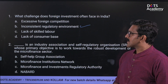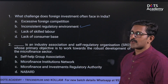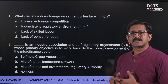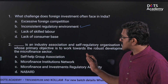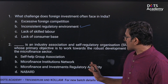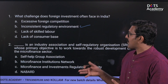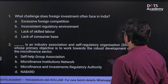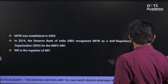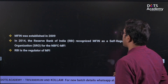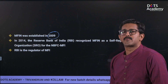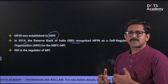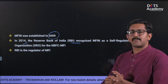The next question is about an industry association and self-regulatory organization (SRO) whose primary objective is to work towards the robust development of the micro-finance sector in India. Options include: self-help group association, micro-finance institutions network, micro-finance and investment regulatory authority. The answer is Micro-Finance Institutions Network (MFIN), established in 2009. In 2014, the Reserve Bank of India recognized it as a self-regulatory organization.